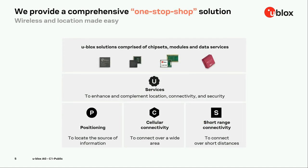The products we offer include modules and chipsets for satellite-based positioning for outdoor usage — that's GNSS, GPS, Galileo, GLONASS, etc. We also have cellular communication and short-range connectivity with Bluetooth and Wi-Fi. In positioning and cellular, we have developed our own in-house silicon. But for Bluetooth and Wi-Fi, we have partnered with market leaders like Nordic, taking their chips, putting them into small form factor modules, and thereby facilitating smooth integration into end products. On top of this, we have a portfolio of services for location, communication, and security.